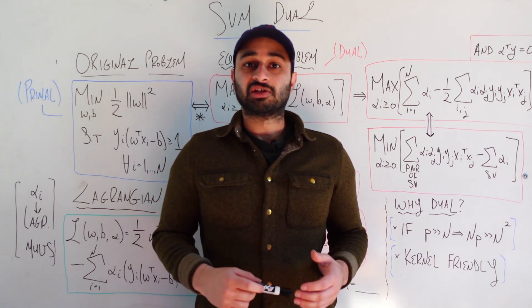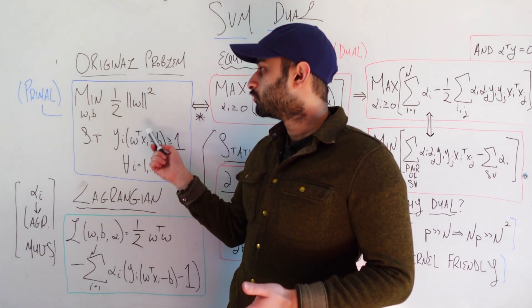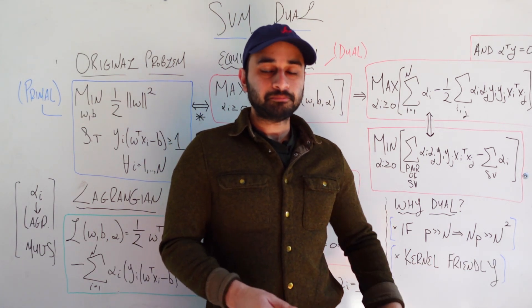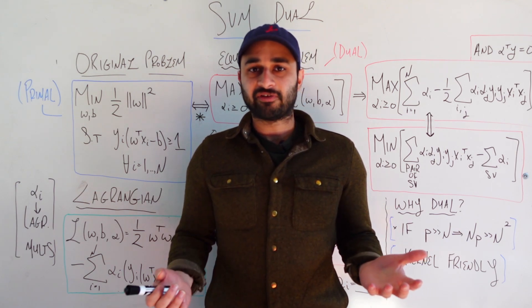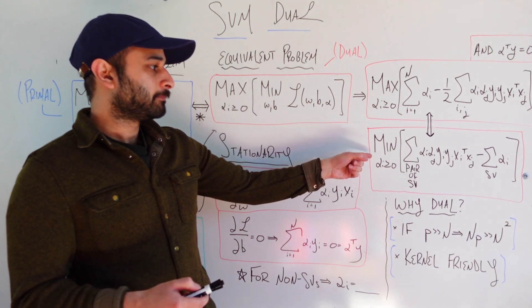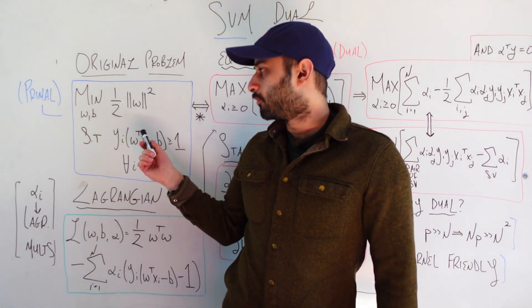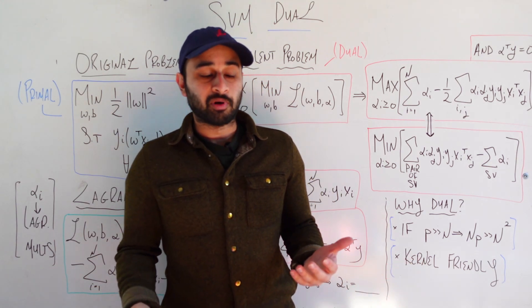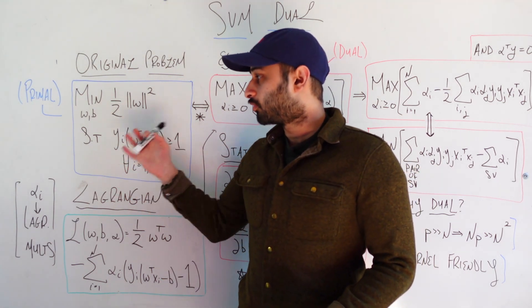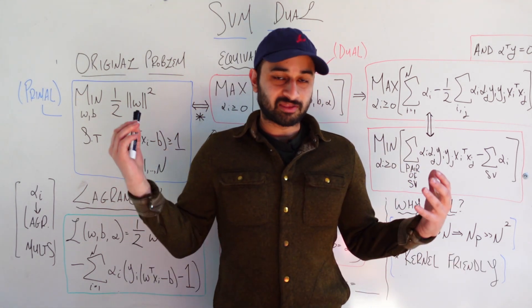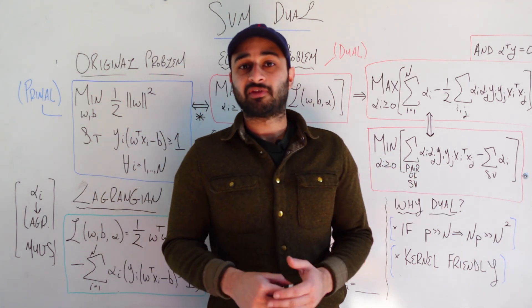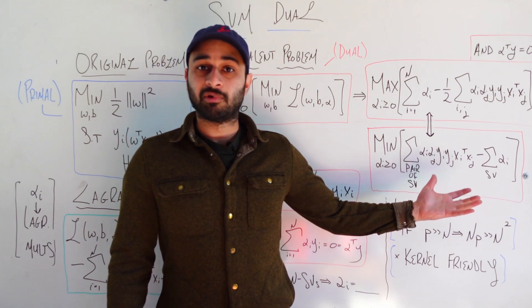What we are going to get out of this video is understanding how we can write the original SVM problem, which is written in this box here, equivalently in terms of an optimization called a dual problem. Now a dual problem, in its most easy definition, is one that looks pretty different. For example, here's the dual problem in its final form. And this looks kind of nothing like the original SVM problem, there looks like a different set of variables altogether. But interestingly enough, in optimization theory we find that solving the dual actually solves the primal, and solving the primal solves the dual. So we'll kind of make that connection as we go, but the point is that we're going to be able to express the SVM problem in a completely different form, and at the end we'll talk about why this alternate form is better for various reasons.